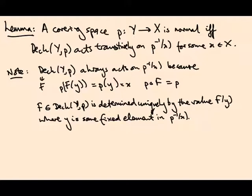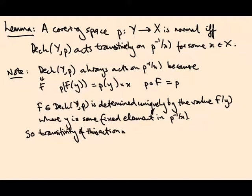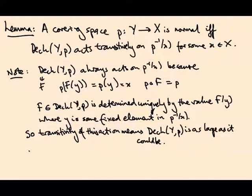So f is determined by its value on y. To say the deck group acts transitively means it is as large as it could possibly be: for each value that f(y) could possibly take, there is an f that achieves it. If two deck transformations take the same value at y, they agree by uniqueness. So transitivity means the deck group is maximal. This lemma is saying normal covers have lots of symmetries — they are maximally symmetric.